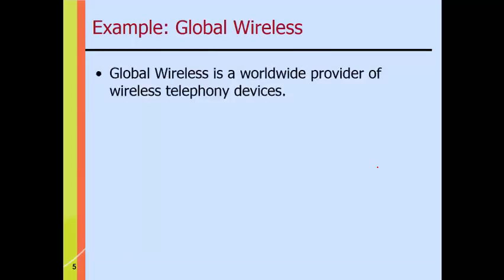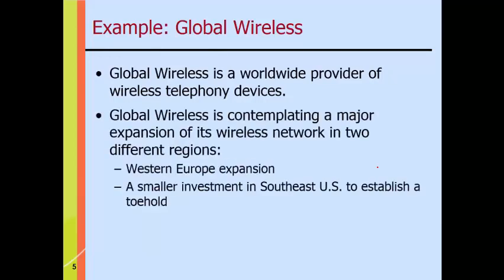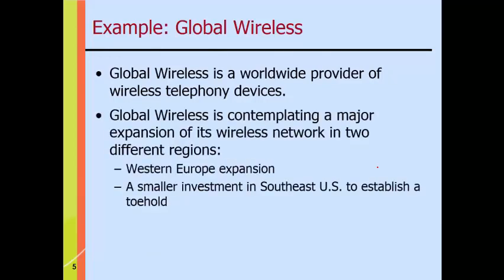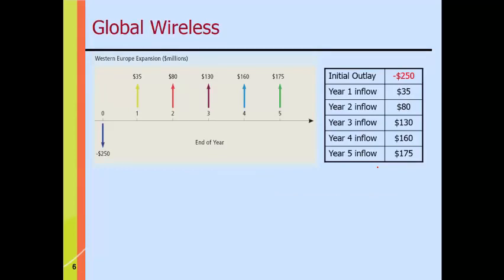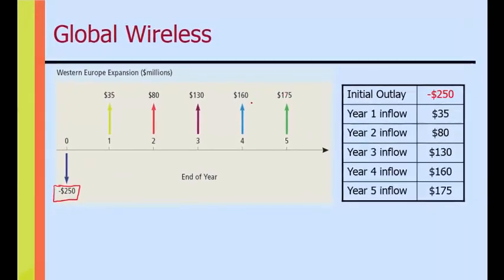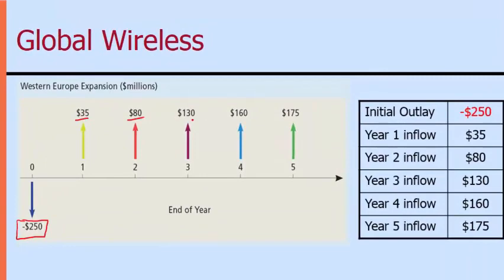We'll start with an example. We have a company called Global Wireless, a worldwide provider of wireless telephones. They're contemplating a major expansion in two different regions: Western Europe and/or the Southeast U.S. The Western Europe expansion will cost $250 million — building infrastructure, towers, and wiring — but is projected to bring more subscribers. The payoff trend increases over time: $35 million in year one, $80 million in year two, $130 million in year three, $160 million in year four, and $175 million in year five.